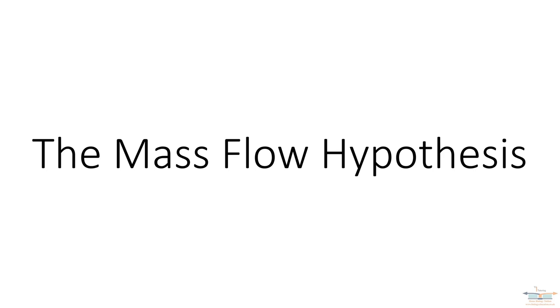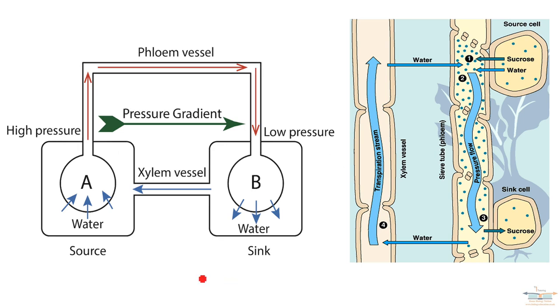So for this video we're just going to look at the mass flow hypothesis and what used to be thought occurred in the movement of sugars. What we use to represent the mass flow hypothesis is this diagram here which I'll label number one. It's a very basic image of the components that are needed for the mass flow hypothesis to occur.